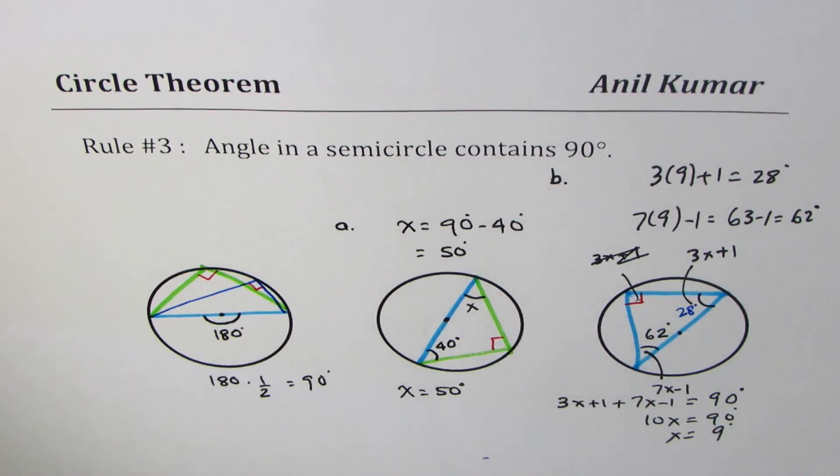So with the help of this rule that angle in a semicircle contains 90 degrees, we can solve such questions relating to circles. Thank you and all the best.